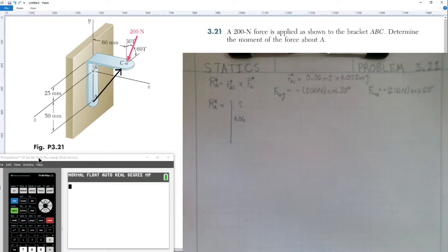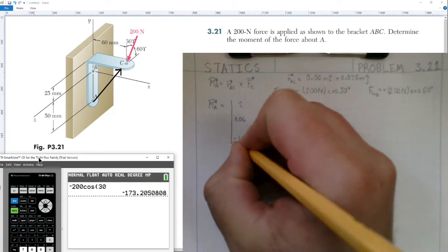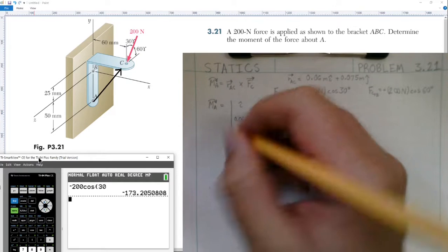Using my calculator, we have negative 200 cosine of 30, which is negative 173.2.